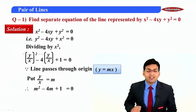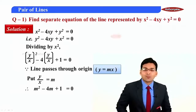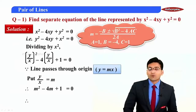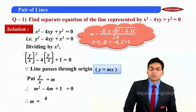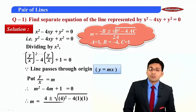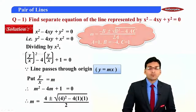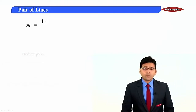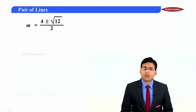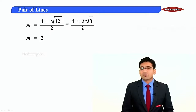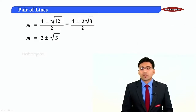This is a quadratic in m. Using the quadratic formula, m = (4 ± √(16 - 4)) / 2 = (4 ± √12) / 2 = (4 ± 2√3) / 2, which gives m = 2 ± √3.